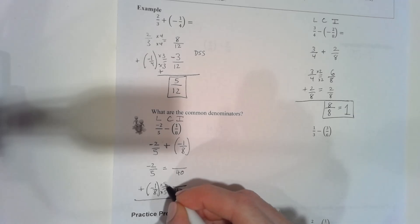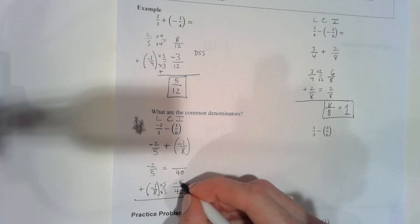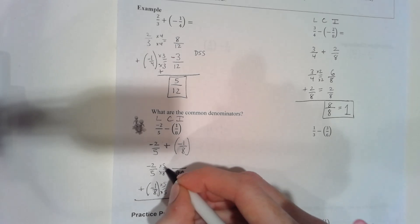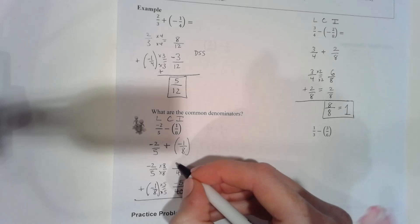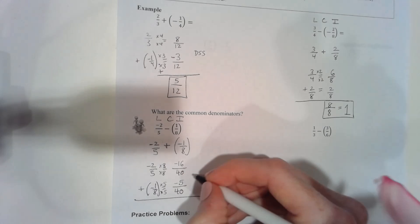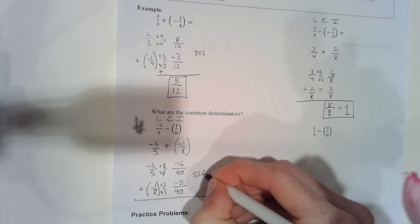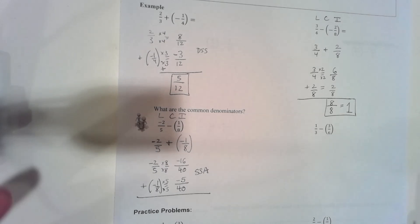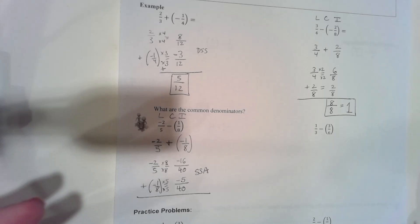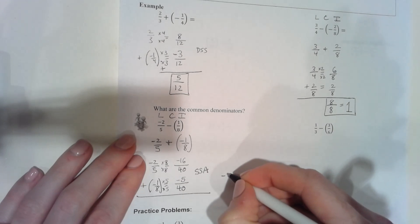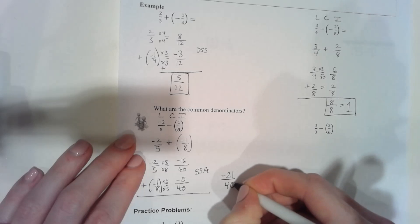Eight times five makes forty, so times five here — negative one times five makes negative five. Five times eight makes forty, so times eight up here gives negative sixteen. Same signs: add. Sixteen plus five — sixteen, seventeen, eighteen, nineteen, twenty, twenty-one. Final answer: negative twenty-one over forty, because both numbers are negative.